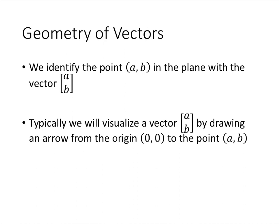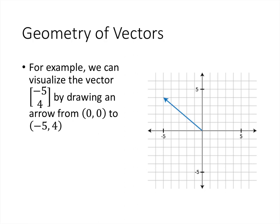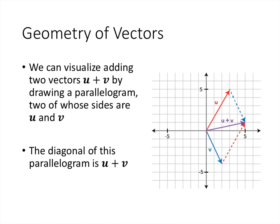Now if you've seen vectors before, you may have seen vectors thought of in a geometric fashion. And so we can identify the point (a, b) in the plane with the vector [a, b]. And so typically we'll visualize that vector by drawing an arrow from the origin, which is the point (0,0), to the point (a, b). And that's going to look like this. So for example, we can visualize the vector [−5, 4] by drawing an arrow from the point (0,0) to the point (−5, 4). So this blue arrow here is a visual representation of the vector [−5, 4].